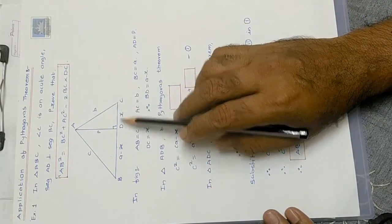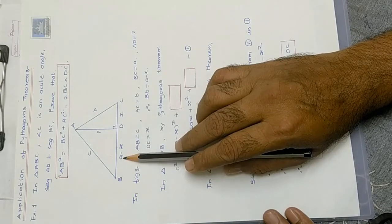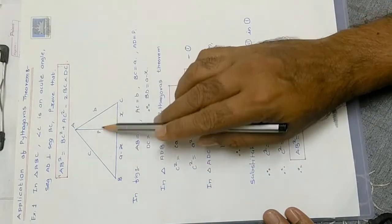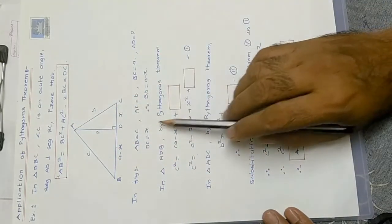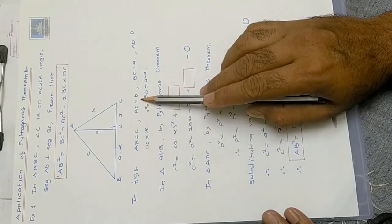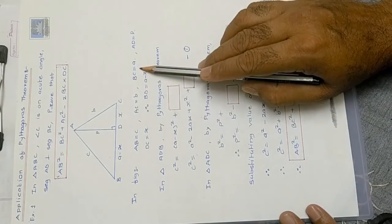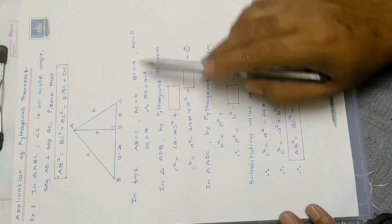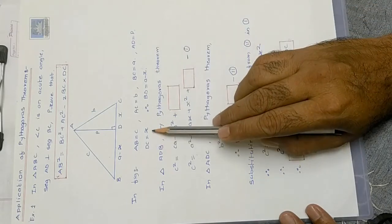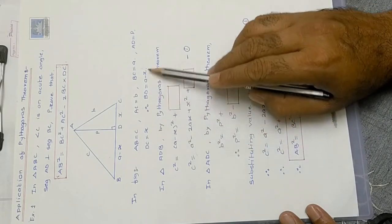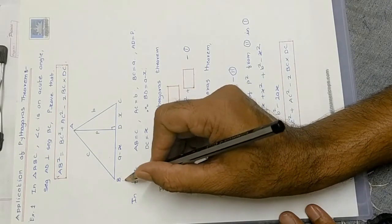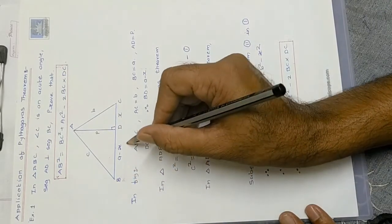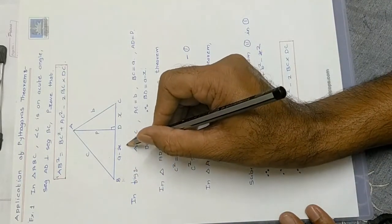Let DC = x, so BD = a − x. Let AD = p. Then: AB = c, AC = b, BC = a, AD = p, DC = x, and BD = a − x.